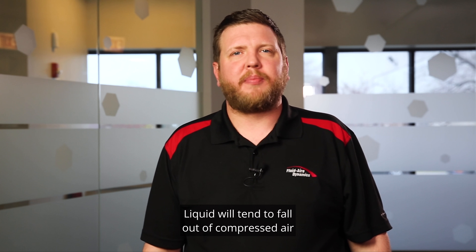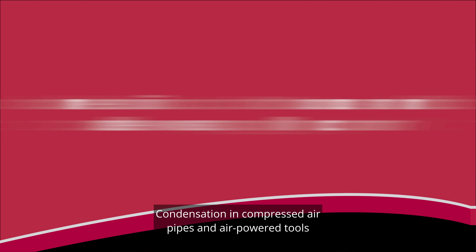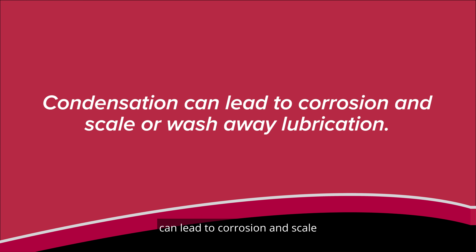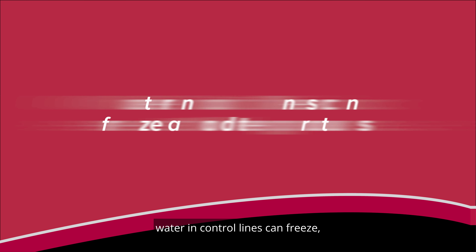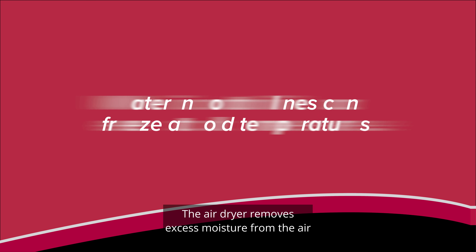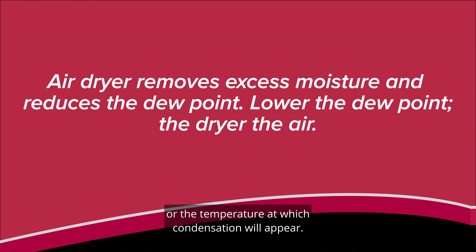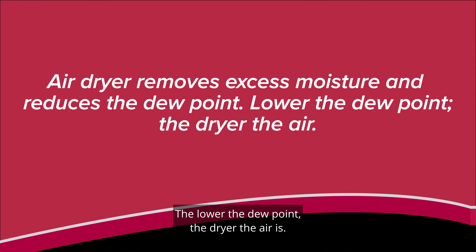Liquid will tend to fall out of compressed air as it moves through the piping system and cools. Condensation in compressed air pipes and air power tools can lead to corrosion and scale, or wash away lubrication in production equipment. If piping is exposed to cold temperatures, water and control lines can freeze, causing blockages or damaging the lines. The air dryer removes excess moisture from the air and reduces the dew point — the temperature at which condensation will appear. Dew point is often used as a measurement of moisture content in compressed air; the lower the dew point, the drier the air.